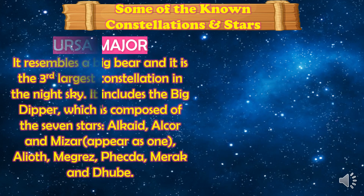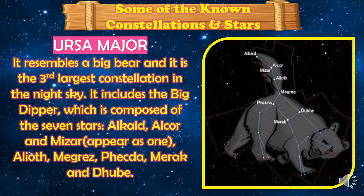First, we have Ursa Major. It resembles a big bear and it is the third largest constellation in the night sky. It includes the Big Dipper, which is composed of seven stars: Alkaite, Alcor and Mizar appear as one, Alyot, Maigris, Pekda, Merak, and Dubi.